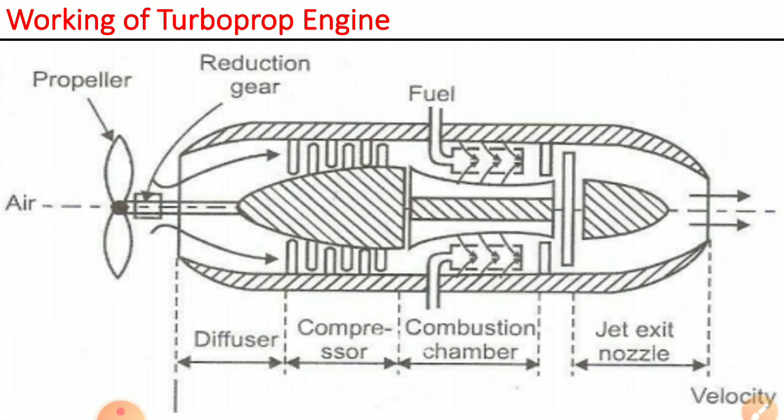Those hot combustible gases then pass over the turbine blades, where they expand partially. The exhaust gases are expanded two times: first when they pass over the turbine blades, and then when they pass through the nozzle. So two times the gases are expanded, and partially they expand at the turbine.